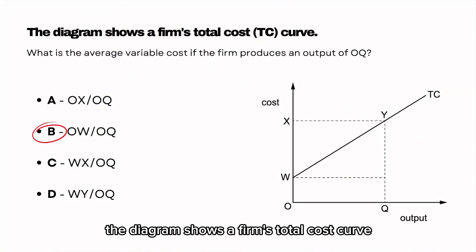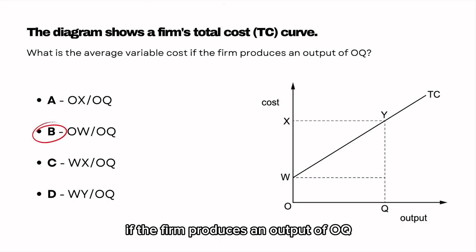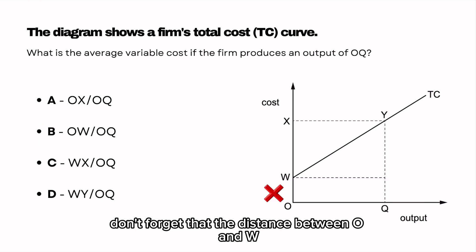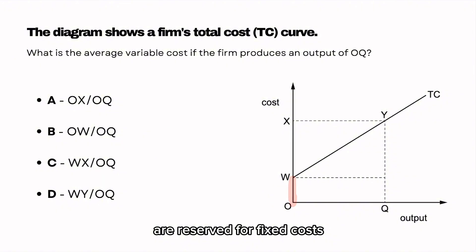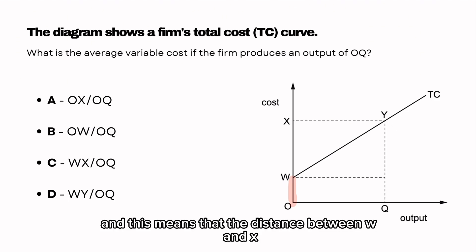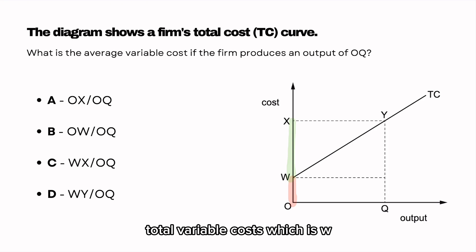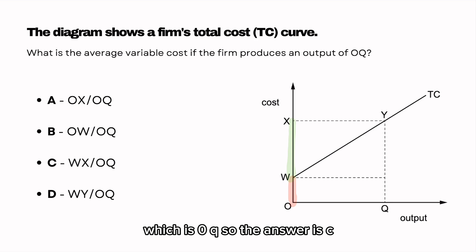The diagram shows a firm's total cost curve. What is the average variable cost if the firm produces an output of OQ? The calculation for average variable cost is total variable cost divided by total output. The distance between O and W is reserved for fixed costs, hence why the total cost line starts there. The distance between W and X represents variable costs. So using our calculation: total variable costs WX divided by total output OQ. The answer is C.